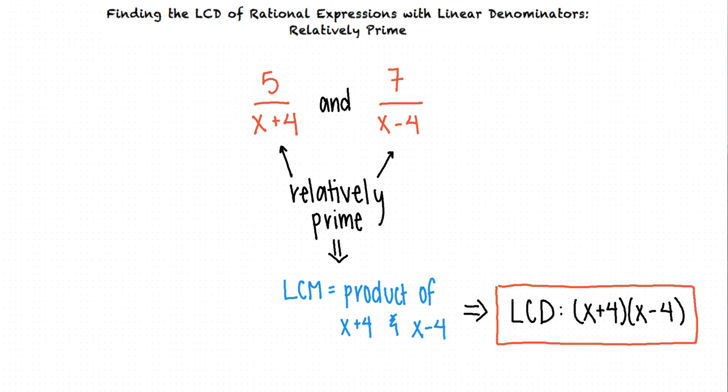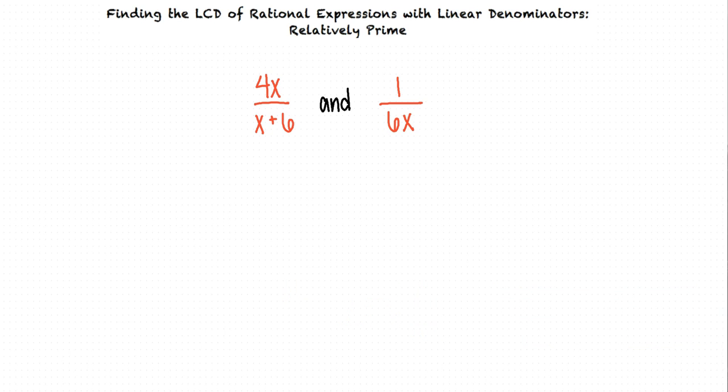I think that makes sense. Could we do another example? Sure. Let's find the least common denominator of 4x over x plus 6 and 1 over 6x.